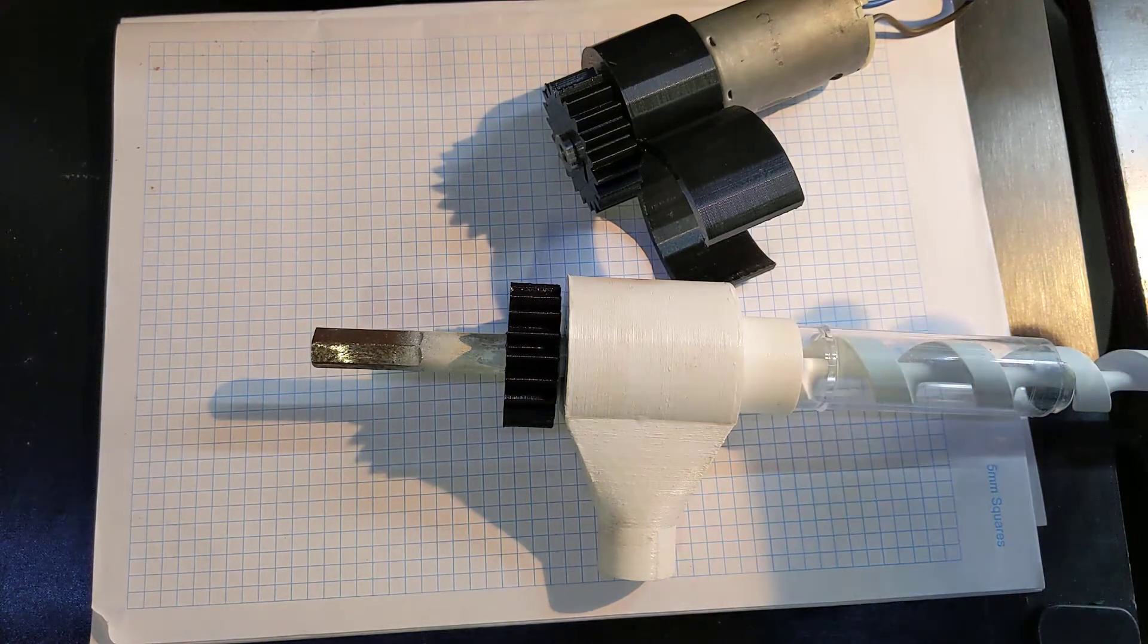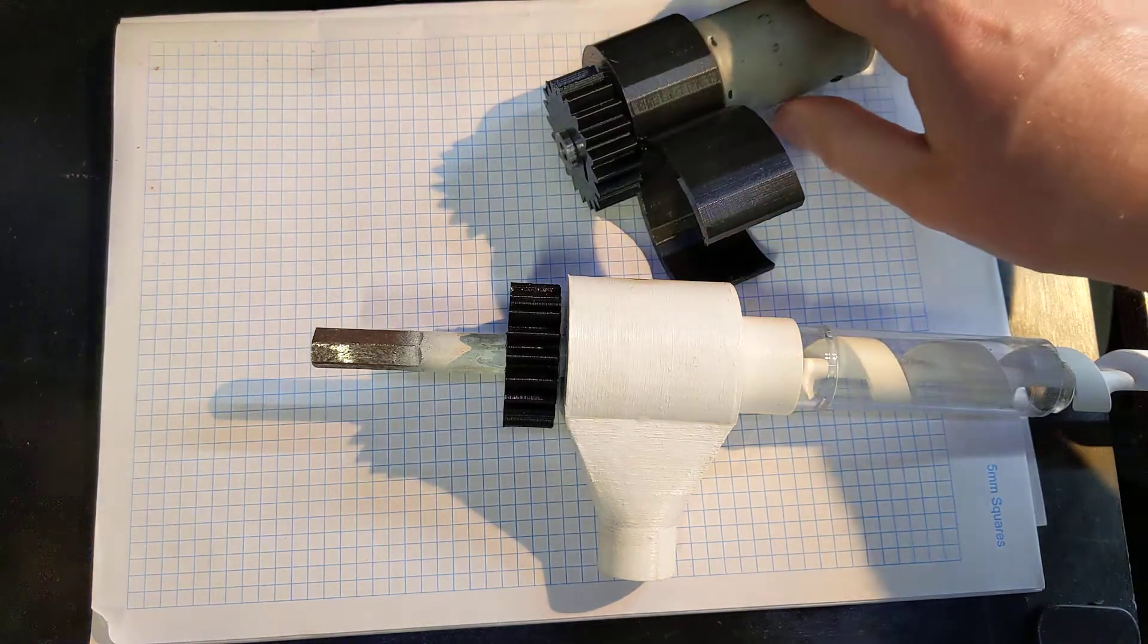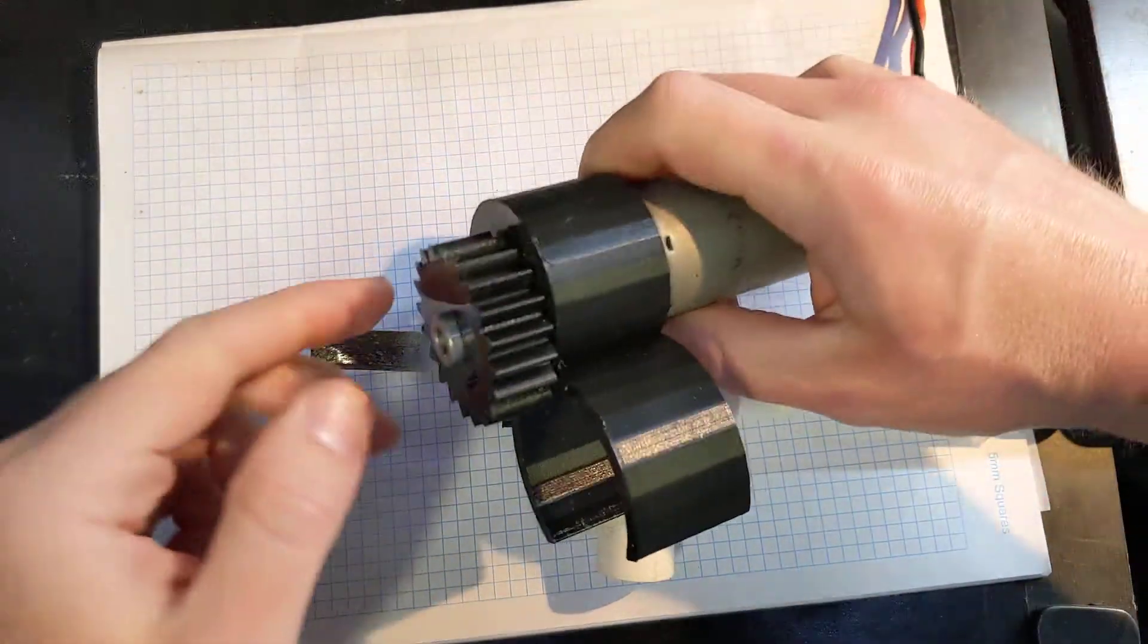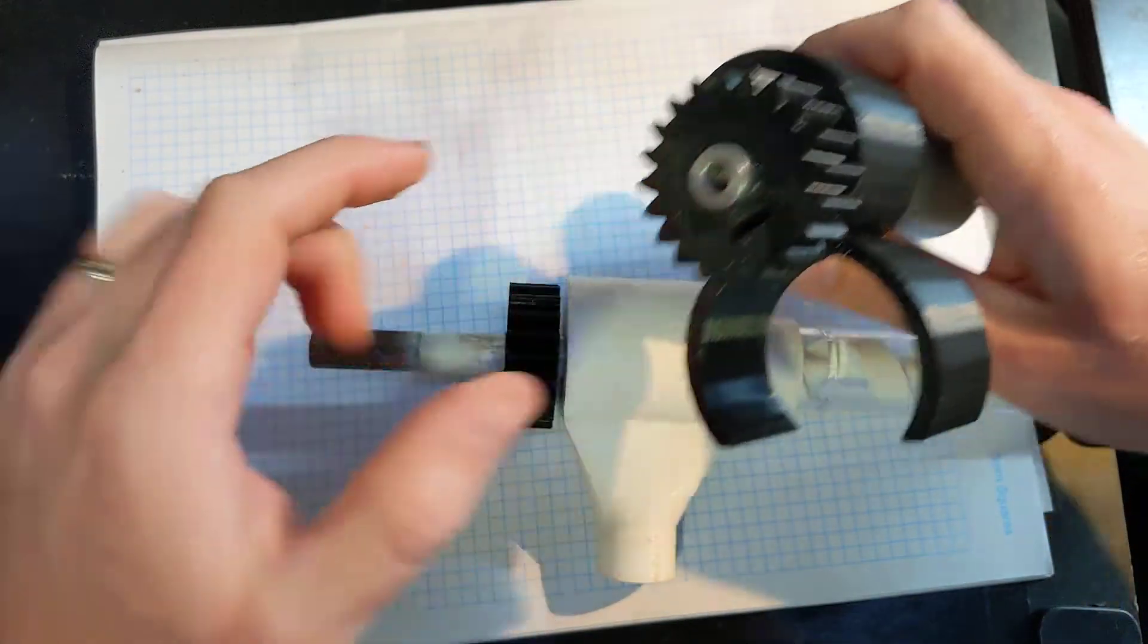So here we have the motor driving setup for the powered hunt extractor. I've got 3D printed gears here and here.